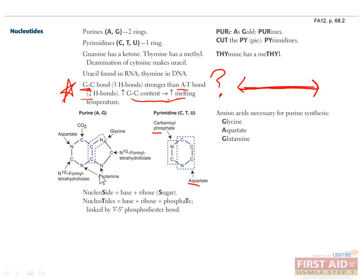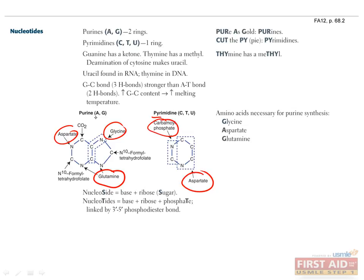You should also know which components are used to build nucleotides. Both types are made primarily from amino acids, with purines requiring aspartate, glycine, and glutamate, and pyrimidines requiring carbamoyl phosphate and aspartate. It just so happens that all the first letters of purine components are A or G, which might help you remember them.